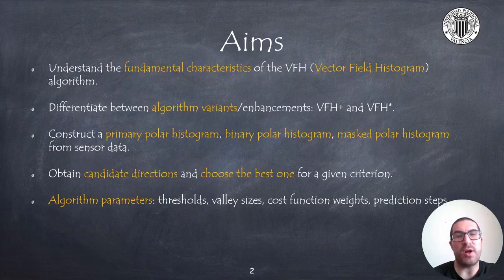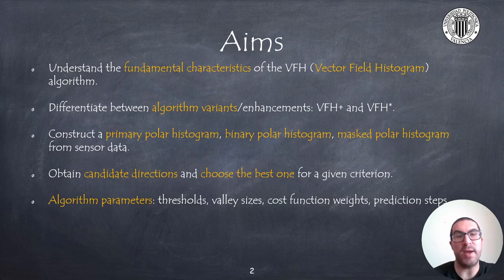The aims of this presentation are to understand the fundamental characteristics of the vector field histogram algorithm and its variants, VFH+ and VFH*, and differentiate them. I will explain how to build primary, binary, and masked polar histograms from sensor data and also how to obtain candidate directions and choose the best one under a given criterion.